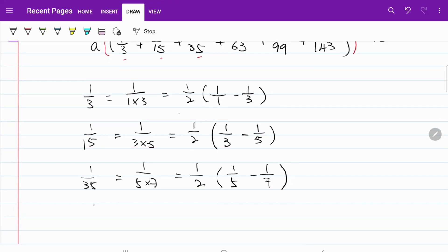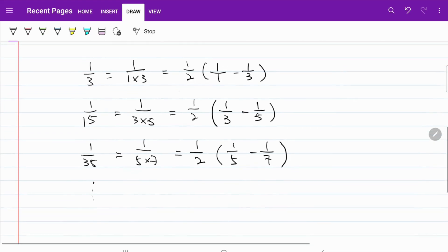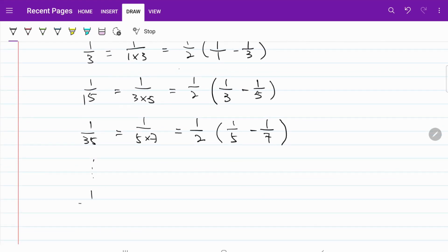And in fact, we can do the same thing all the way to the end where 1 over 143 is equal to 1 over 11 multiplied by 13 which is equal to 1 over 2 multiplied by 1 over 11 minus 1 over 13. Let's try to make use of this pattern.